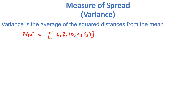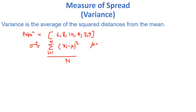So we want to know the variance. The formula for variance is denoted by sigma squared, and the formula is: the sum from i equals 1 to n of (xi minus mu) squared, divided by n, where mu is your mean and n is your total population.